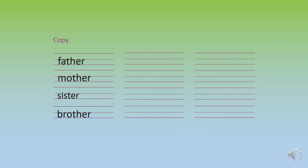Your second activity. What do you have to do? Yes, you have to copy. That means you have been given father, mother, sister, brother. So you have to look and you have to copy.